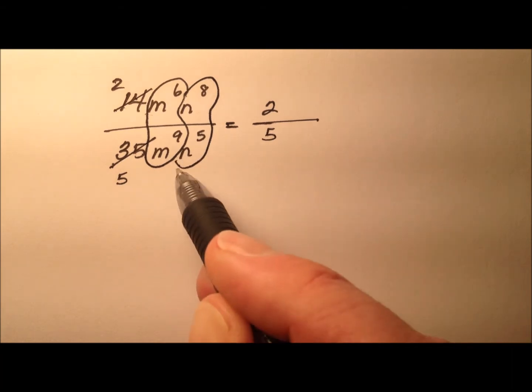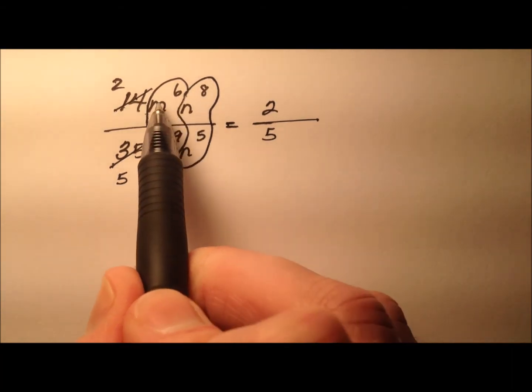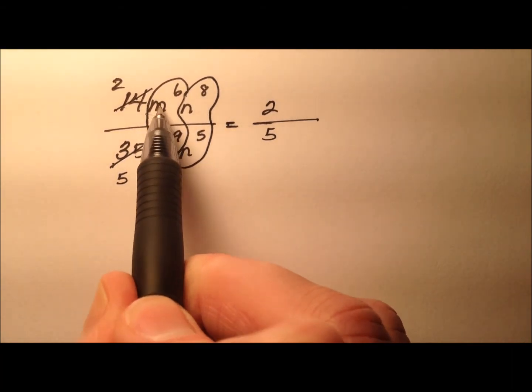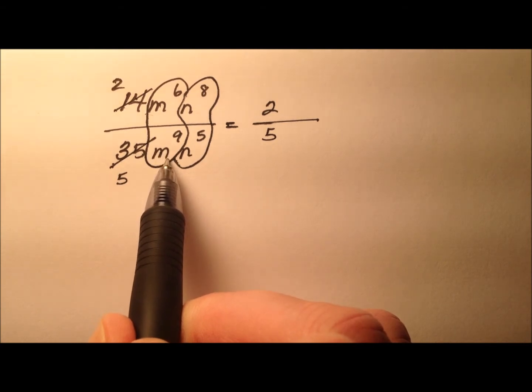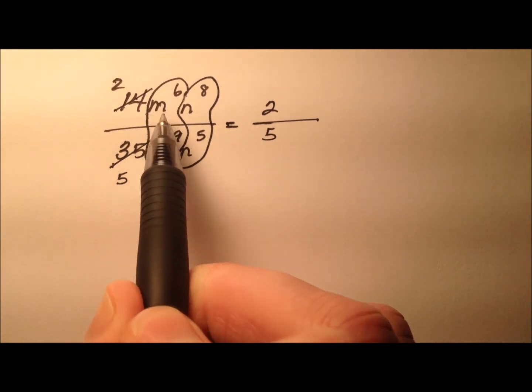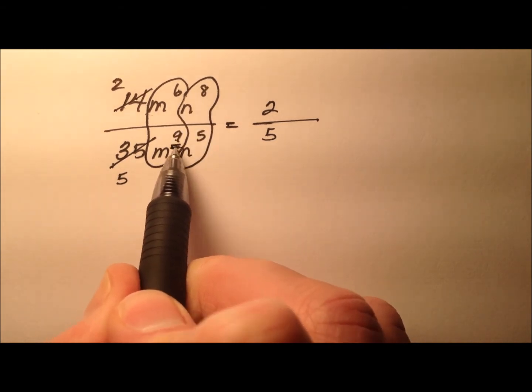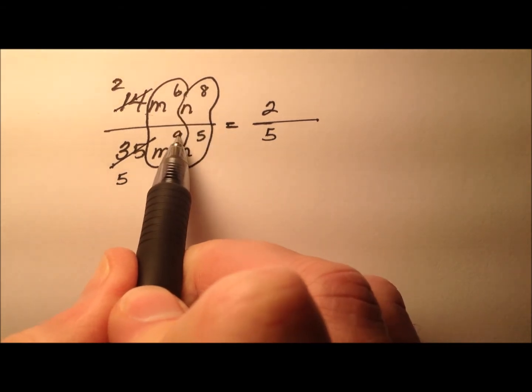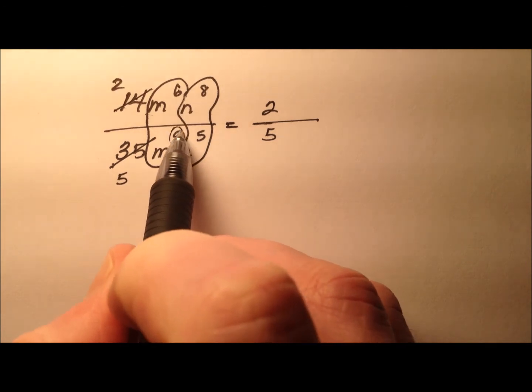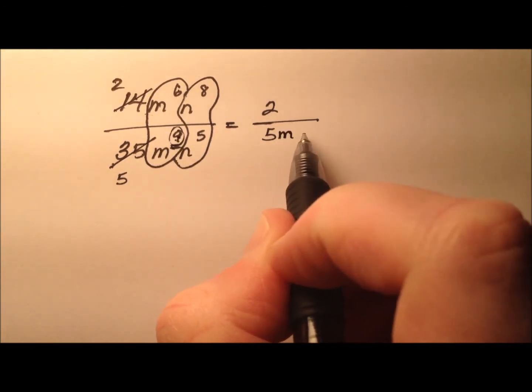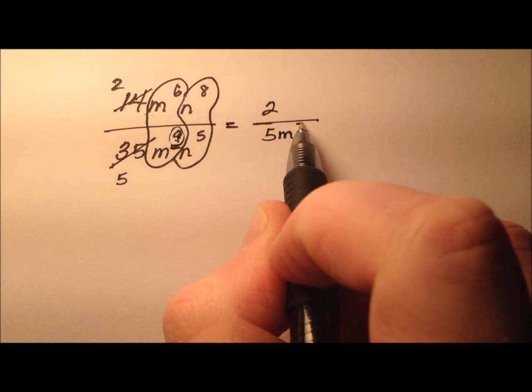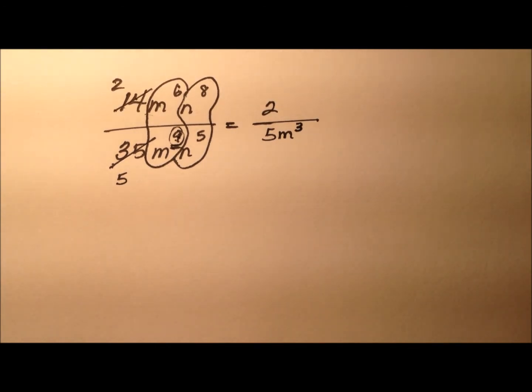Let's talk about our variables next. We have m's and we have n's. Remember, when you're dividing like bases, you will subtract the exponents. For our m's, we have 6 and 9. The 9 is actually bigger than the 6, so we're going to say 9 minus 6. But since the larger was on the bottom, I'll put this 9 minus 6 in the denominator. So m cubed is actually down below here.